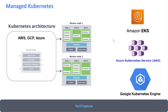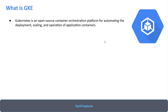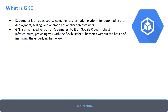Now let's look at what Google Kubernetes Engine is. GKE is the managed version of Kubernetes built on Google Cloud's infrastructure. Kubernetes automates the deployment, scaling, and operation of containerized applications, and GKE provides the flexibility of Kubernetes without the hassle of managing underlying hardware. If you run open-source Kubernetes on your own server, you manage your own storage, networking, and all infrastructure. With the managed version, the cloud provider handles both the infrastructure and the control plane.